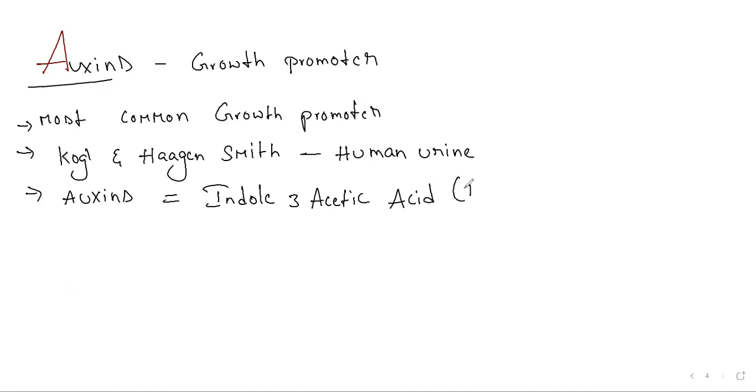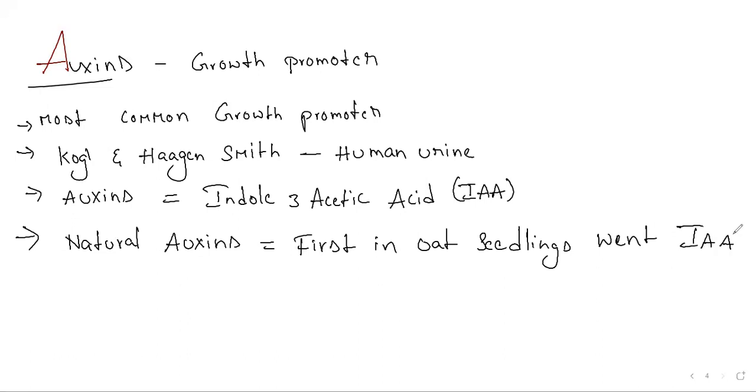Natural auxins were first discovered in oat seedlings by Went. IAA (Indole-3-acetic acid) and IBA (Indole butyric acid) are isolated from plants.